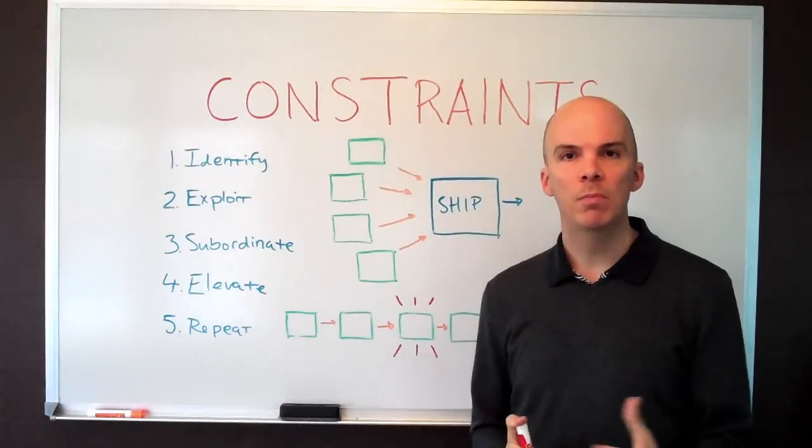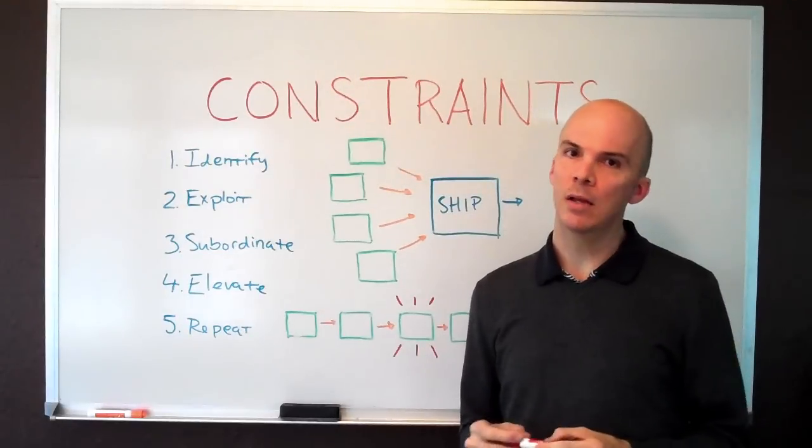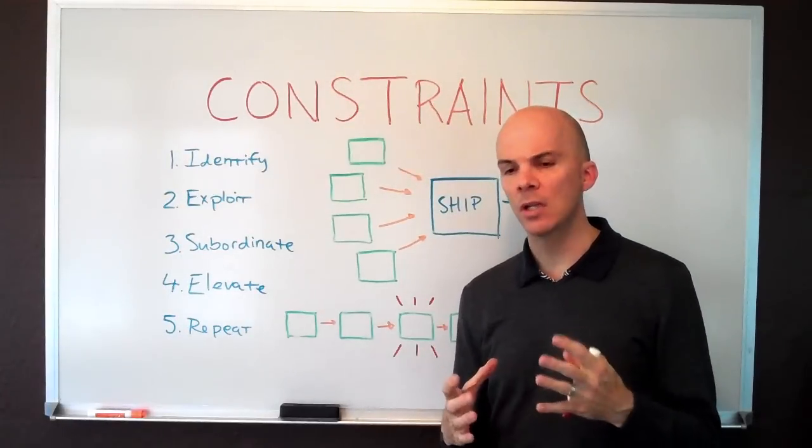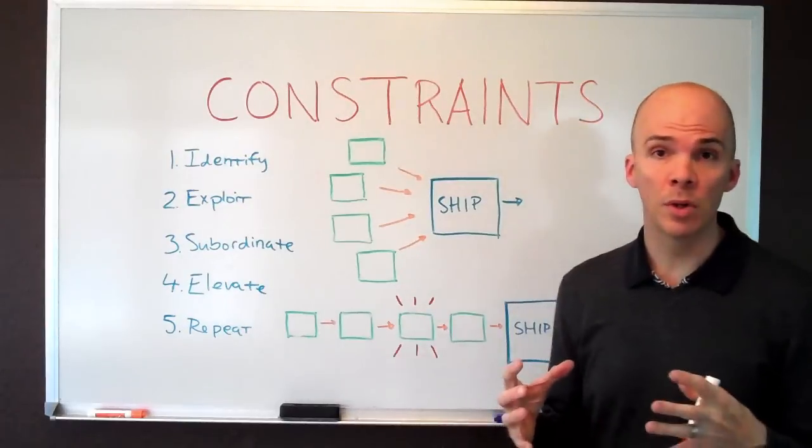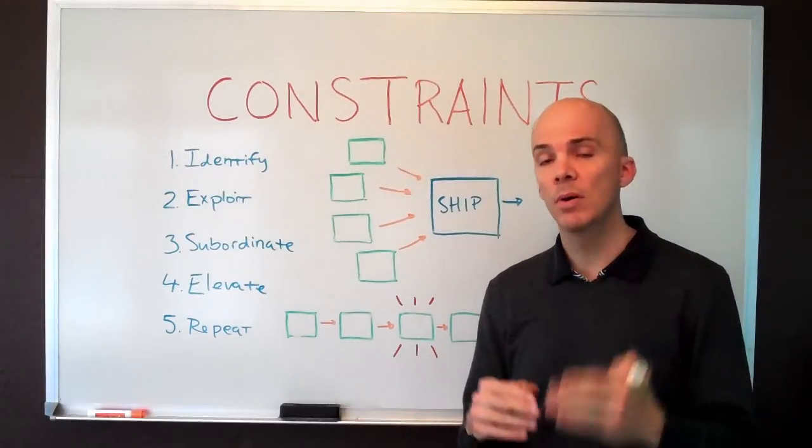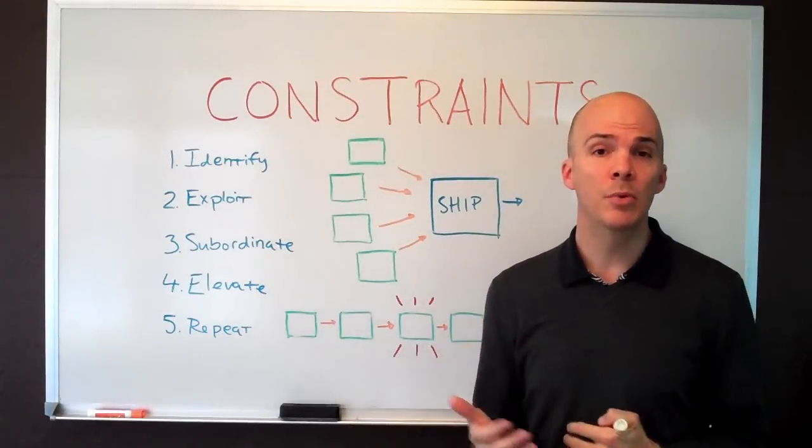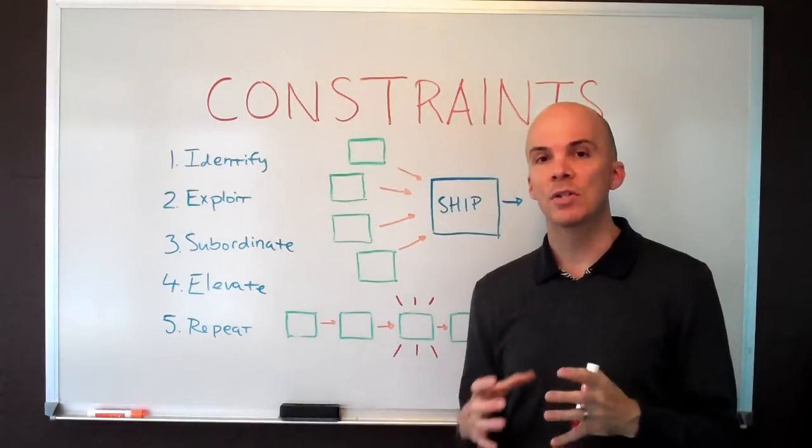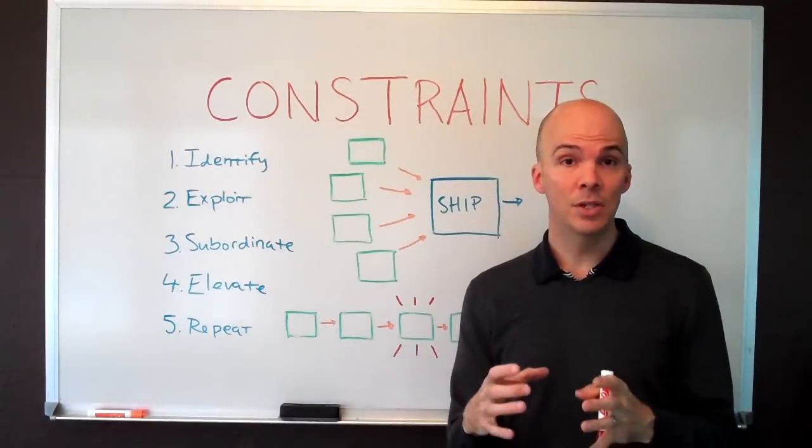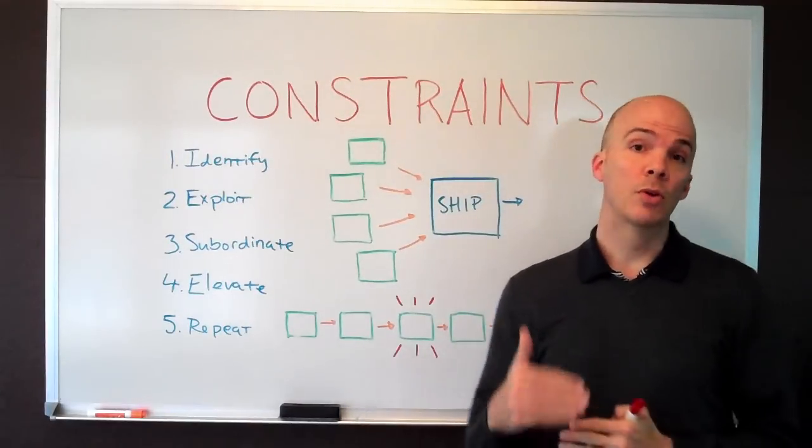This is a management theory put out by a guy named Eli Goldratt a couple decades ago, and in a nutshell it says that within your organization there's always going to be a constraint. It could be a person, a process, a piece of machinery, a policy.